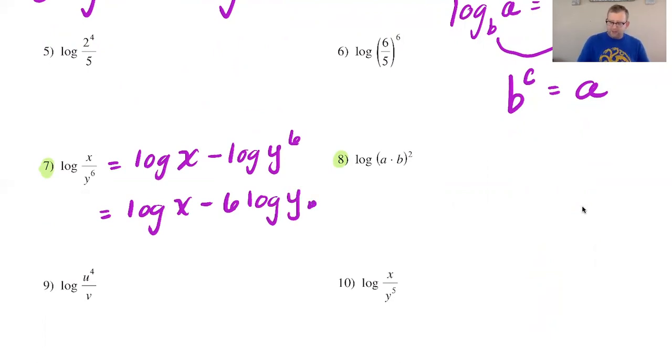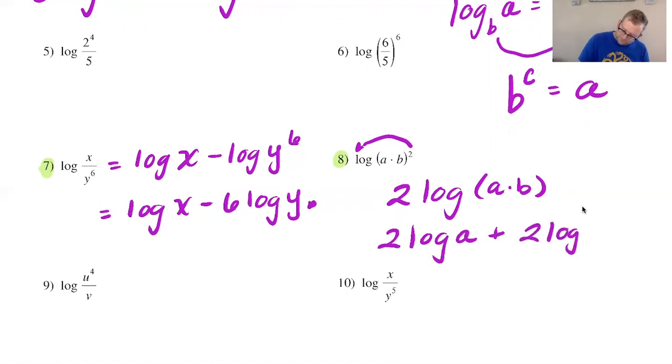Number eight we have the log of the product of ab all squared and what I'm going to do is throw the two down in front of the log and then expand accordingly. There you go.